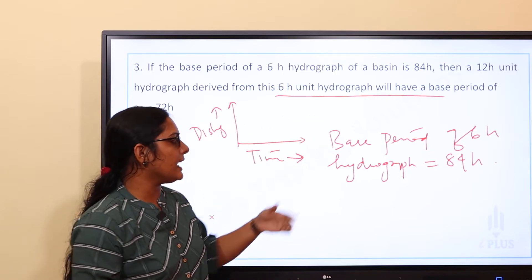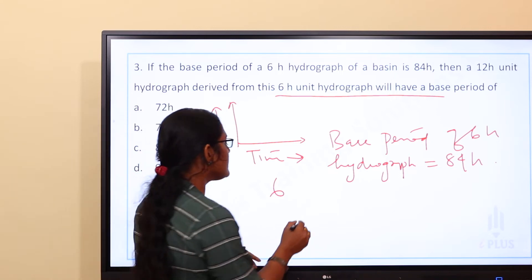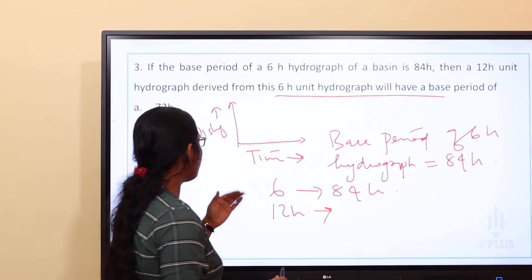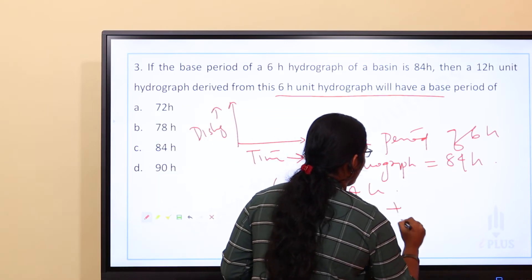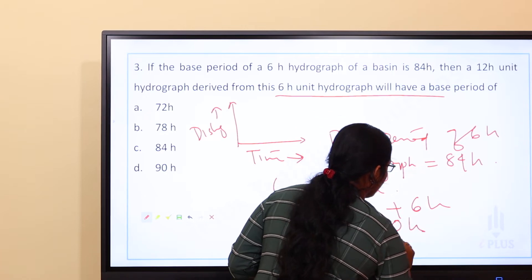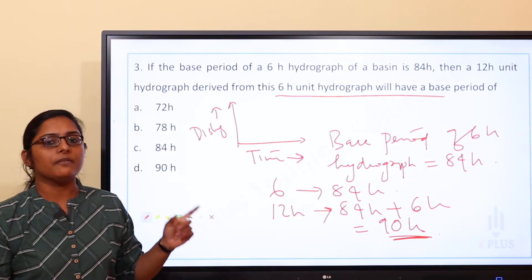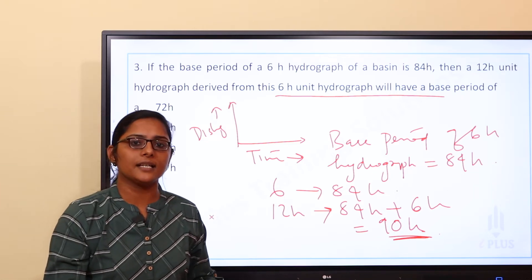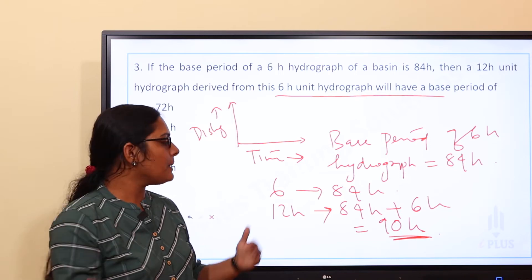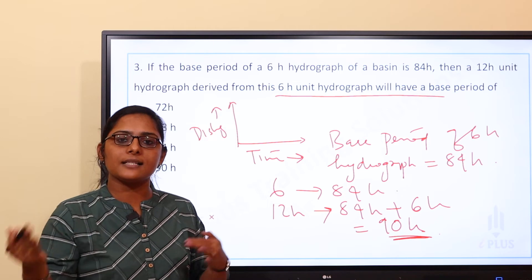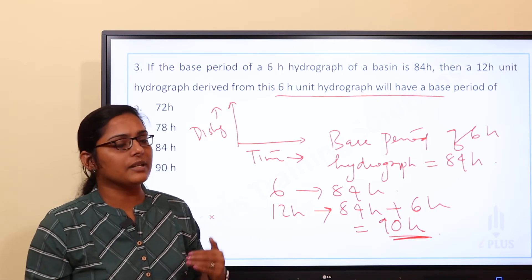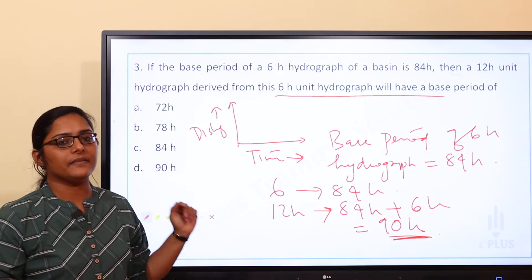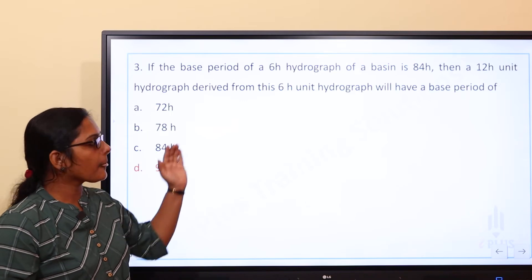For a 6-hour unit hydrograph with a base period of 84 hours, we need to find the base period of the 12-hour unit hydrograph. The formula relates the base period: for a 12-hour unit hydrograph, the base period is approximately 84 + 6 = 90 hours. So the base period of the 12-hour unit hydrograph is 90 hours.